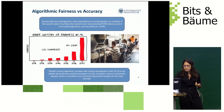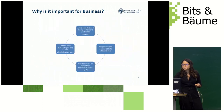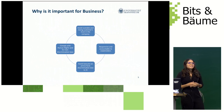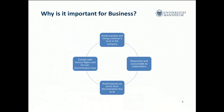Of course, accuracy and fairness involve a trade-off, and how we prioritize will depend on several factors including personality, which we will see later. Why is this important for business? Aside from the evident societal harm that automated decision making has the potential to do, businesses want to avoid scandals, keep the trust of customers, be reliable and accountable to stakeholders, and comply with human rights and non-discrimination laws — and of course avoid discrimination lawsuits based on prima facie discrimination due to AI.